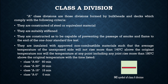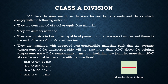Class A divisions are insulated with approved non-combustible material such that the average temperature of the unexposed side will not rise more than 140 degrees Celsius above the original temperature, nor will the temperature at any point including any joint rise more than 180 degrees Celsius above the original temperature. The 140°C is the average temperature of the bulkhead on the unexposed side, while 180°C applies to localized points such as where a stiffener beam is welded, as stiffener beams act as thermal conductors carrying heat from the fire zone.